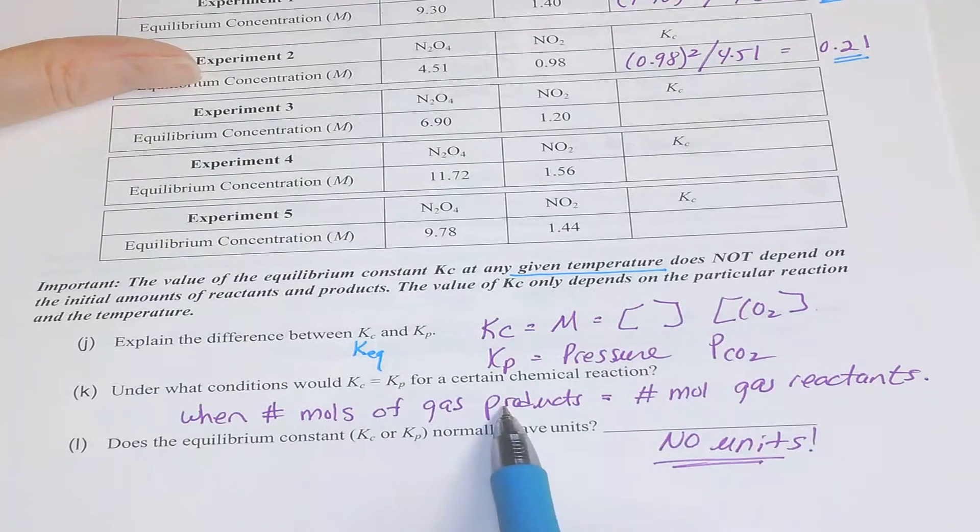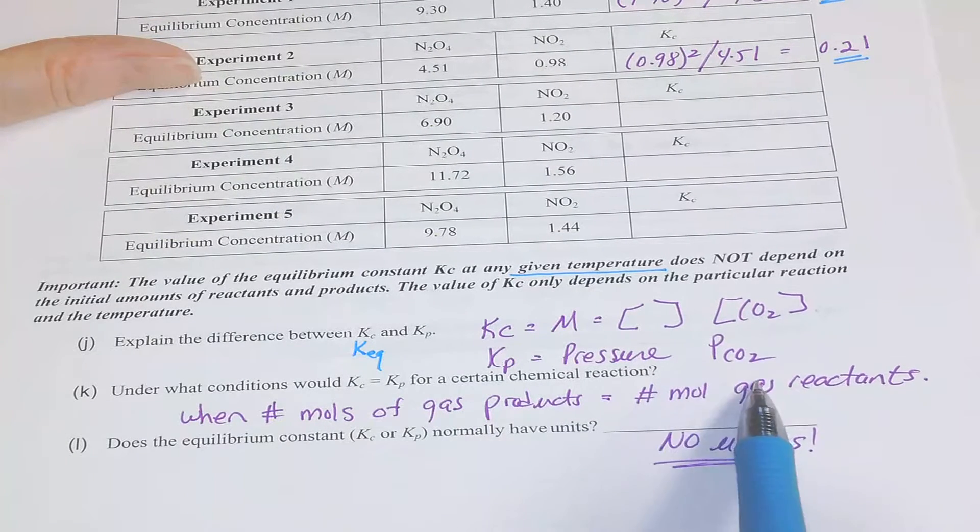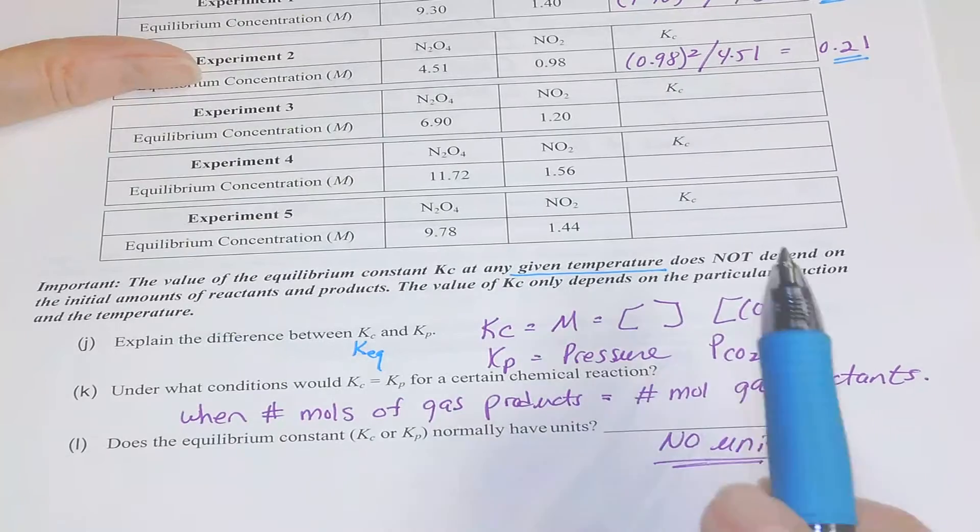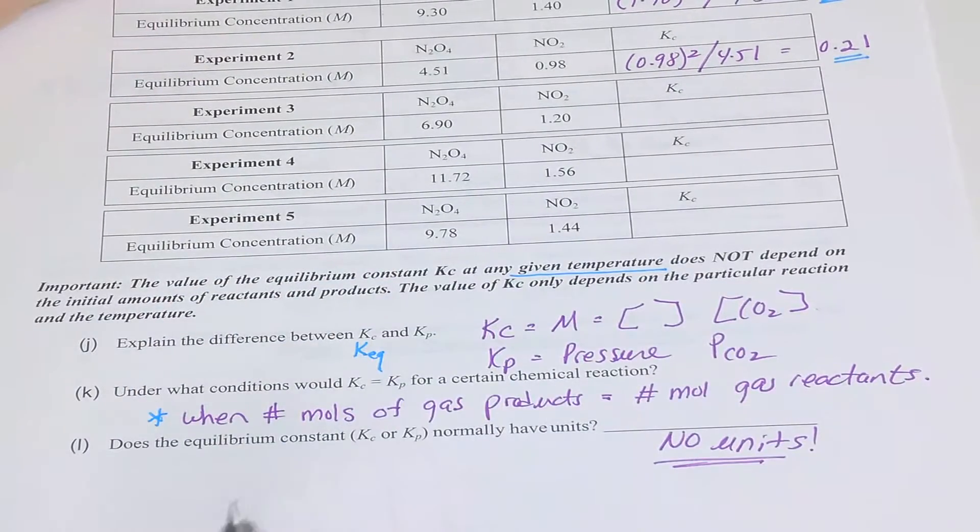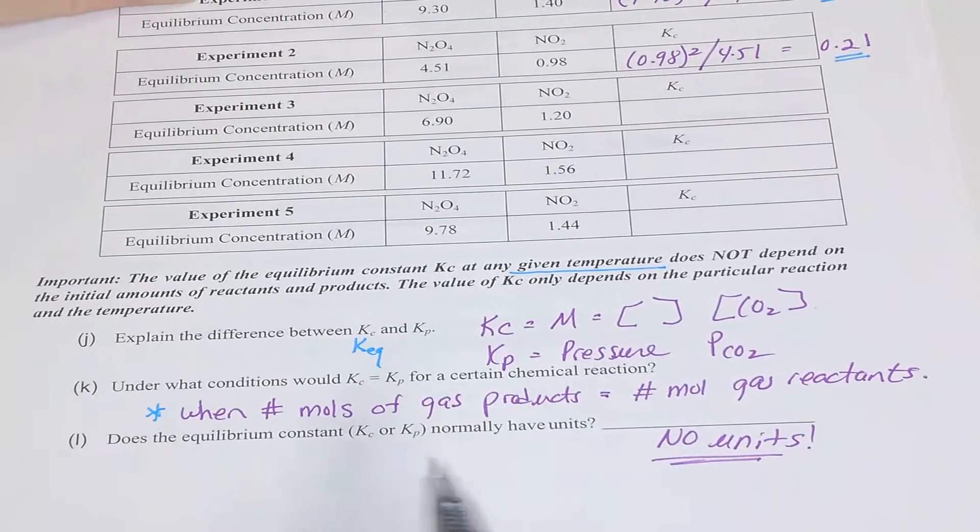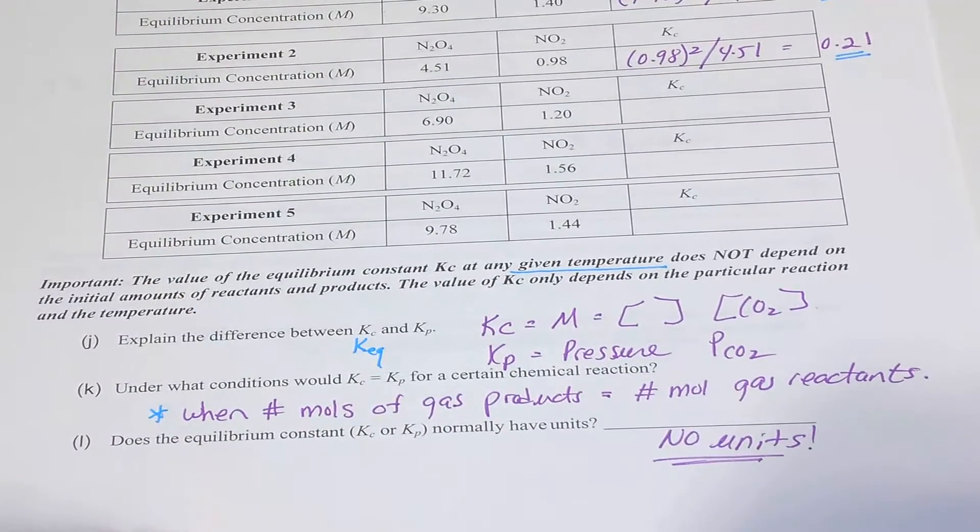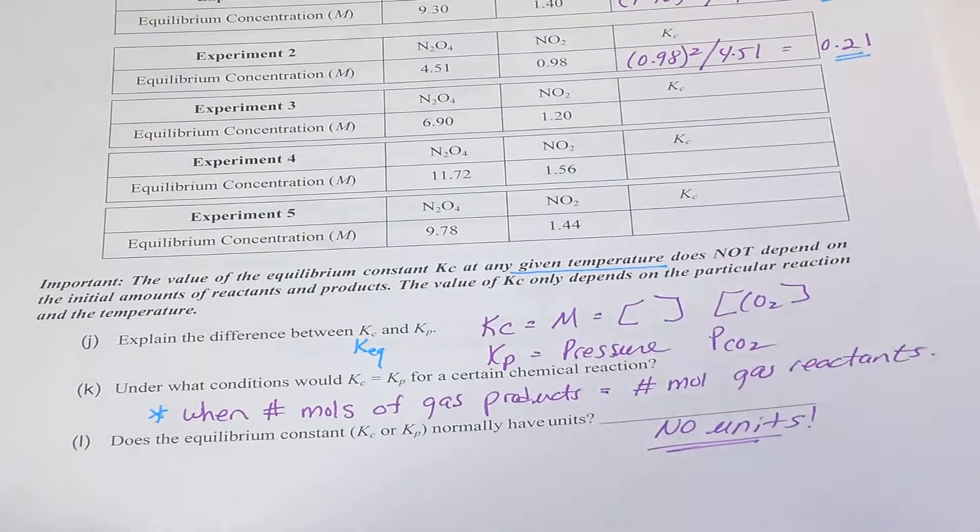When your moles of gaseous products equal your moles of gaseous reactants, and we'll talk about this more, your KC and your KP are equivalent. Usually there are no units put down for K values.